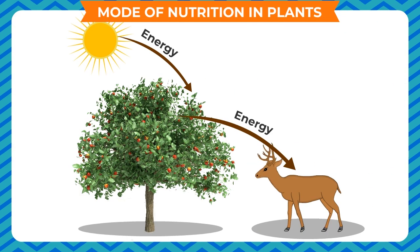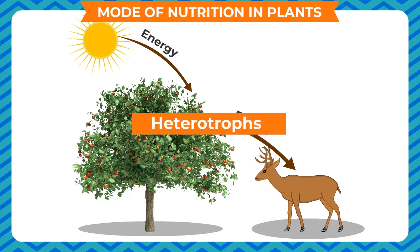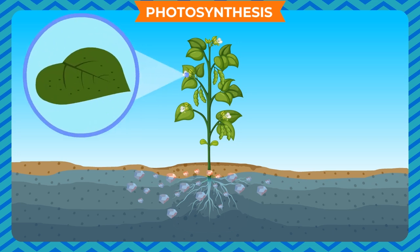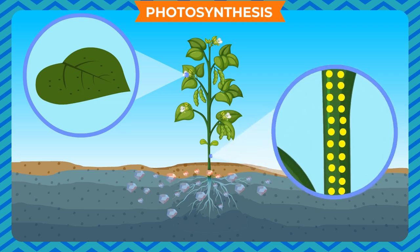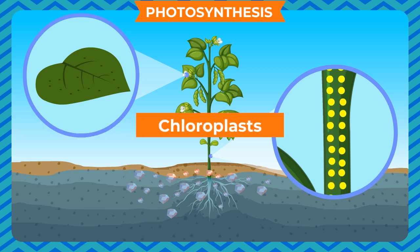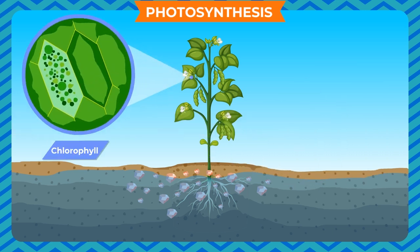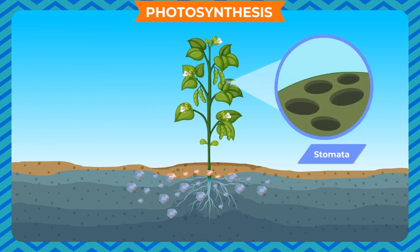All living organisms except plants take food from plants and hence are called heterotrophs. Photosynthesis: green plants make their food in their leaves, which are called the food factory of a plant. The cells of green leaves and young stems contain numerous green structures called chloroplasts. Chloroplasts are green because of a green pigment called chlorophyll.